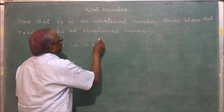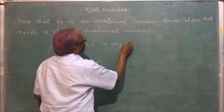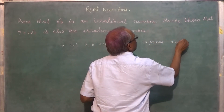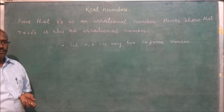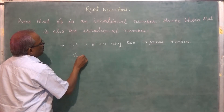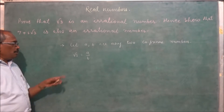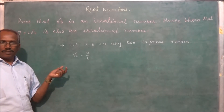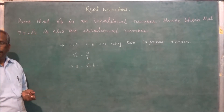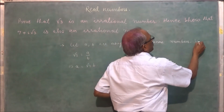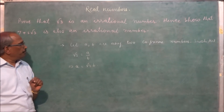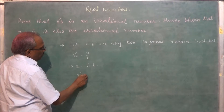Let a and b be any two co-prime numbers. Assume root 3 is a rational number, so root 3 is equal to a upon b. Squaring both sides: a squared is equal to 3b squared. This implies a squared is a multiple of 3.